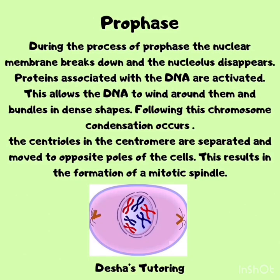After preparing itself for cell division, the cell then enters prophase. During prophase, the nuclear membrane breaks down and the nucleolus disappears. Proteins associated with the DNA are activated, allowing the DNA to wind around them and bundle into dense shapes. Following this is chromosome condensation. The centrioles at the centromere are separated and move to opposite poles of the cell, resulting in the formation of a mitotic spindle.